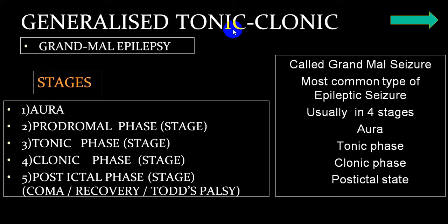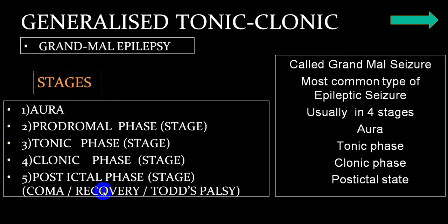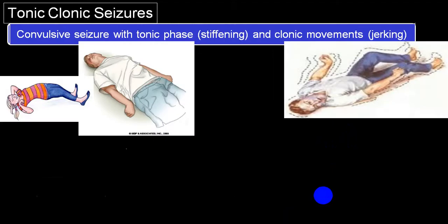As far as generalized tonic-clonic seizure is concerned, also called Grandmal Epilepsy, there are commonly five stages: stage of aura, prodromal phase, tonic phase, followed by clonic phase, followed by post-ictal phase, in which the person will go into coma. Then they recover completely, and sometimes there is persistence of some symptoms and signs for a few minutes to hours — we call it Todd's palsy. So the four phases classically described are: aura, tonic, clonic, and post-ictal.